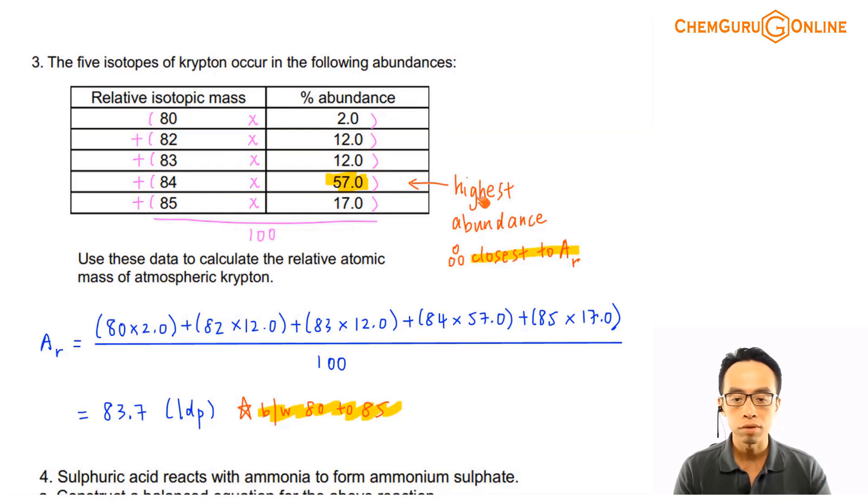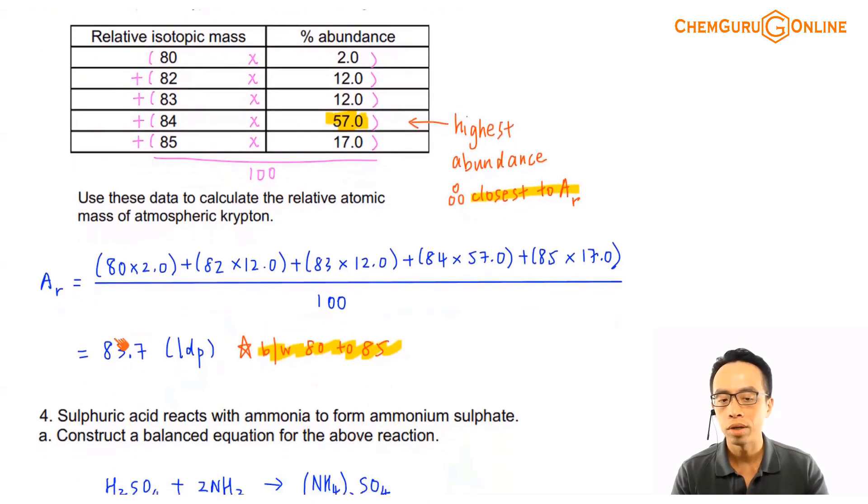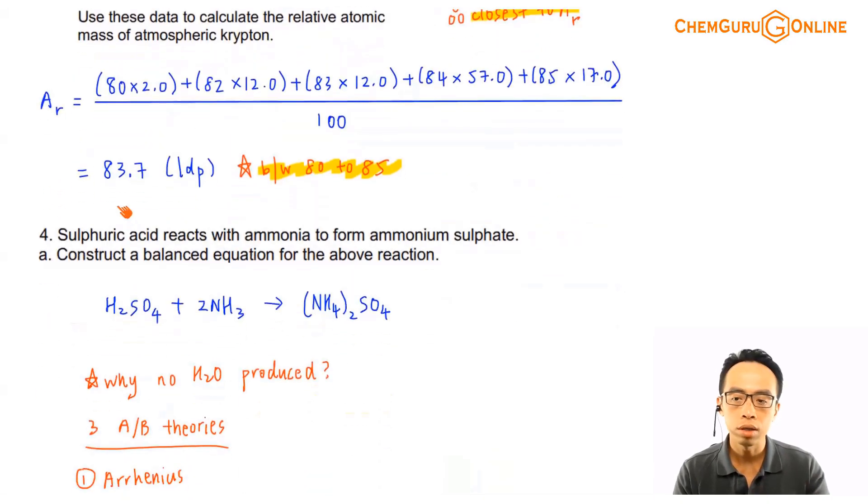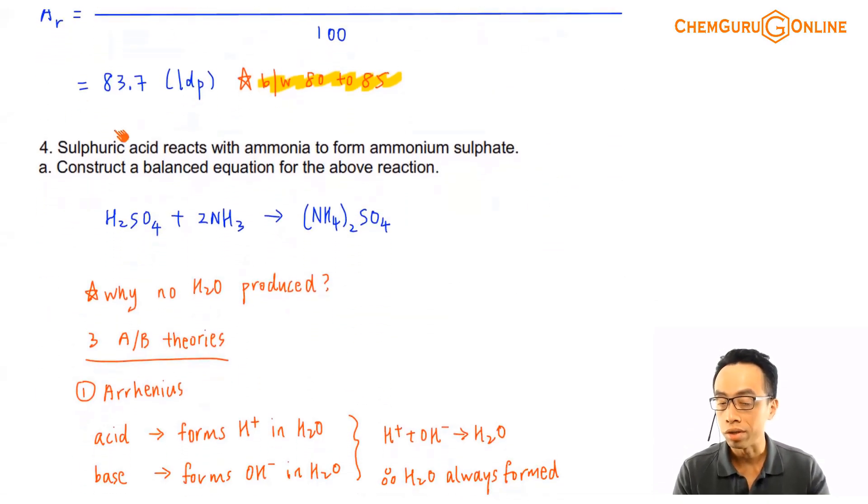So you notice, what we can actually do is make use of these two ideas: it must be between the biggest and the smallest value, and it has to be closest to the one with the biggest abundance. Making use of this idea, we can actually verify whether this answer that I'm calculating is reasonable or not reasonable.